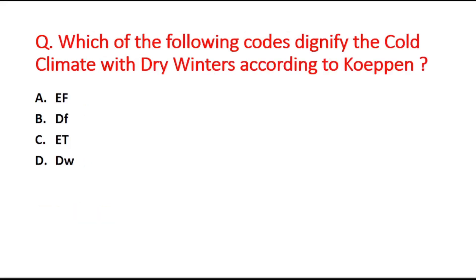Next question: Which of the following codes signify the cold climate with dry winters according to the Köppen climate classification? Option A is Ef, B is Df, C is both E and T, and D is Dw. The right answer is option D, that is capital D and small w — Dw.